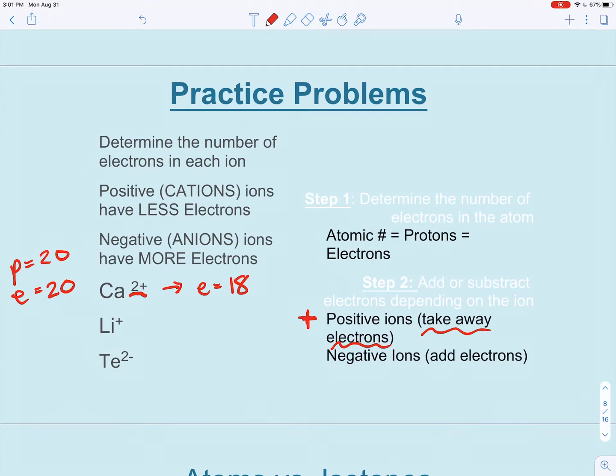What about for lithium? I want you to try this one. How many electrons would lithium plus one have? Hopefully you looked up lithium and you saw that it normally has three electrons. But since this is plus one, we're going to take away one of those electrons. So our final answer should be two electrons.